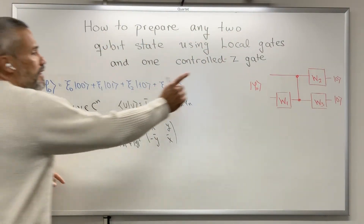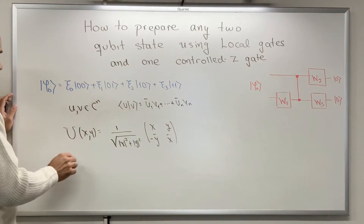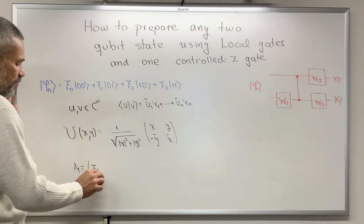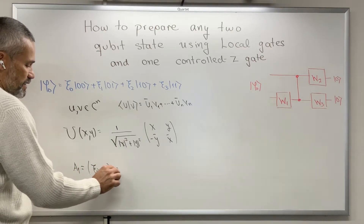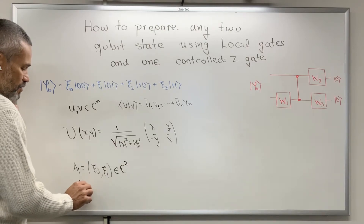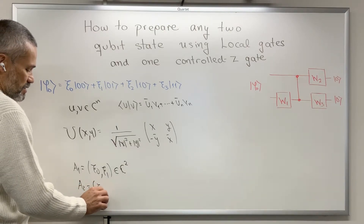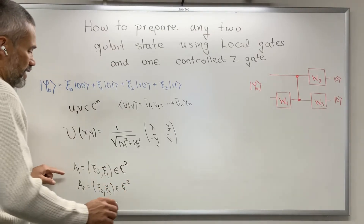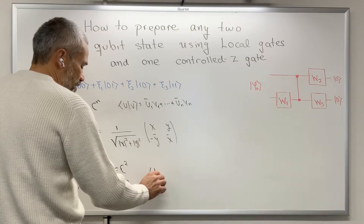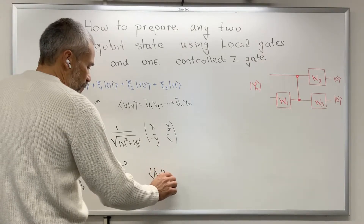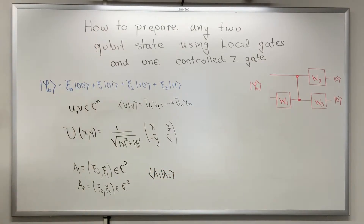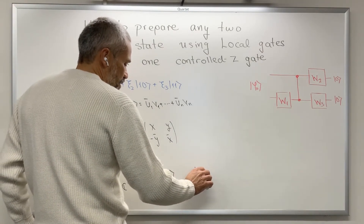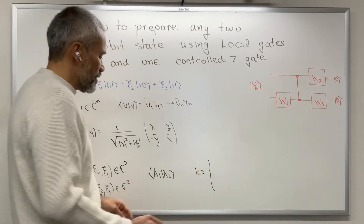Before computing W1, let me define the vector a1 to be the vector (c0, c1) — a vector in C². And a2 equal to (c2, c3), another vector in C². Then we can compute the inner product between a1 and a2.